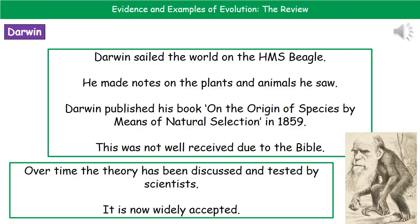That book summarised his ideas about natural selection and what led to every organism evolving over time. It wasn't received well, and the reason behind this negativity was down to the very strong religious beliefs of the population at that time, because what Darwin was saying was obviously completely opposite to what the Bible said. As a result, there was a lot of mocking of Charles Darwin — the picture in the bottom right is one they published in the newspapers, putting his head on the body of an ape.